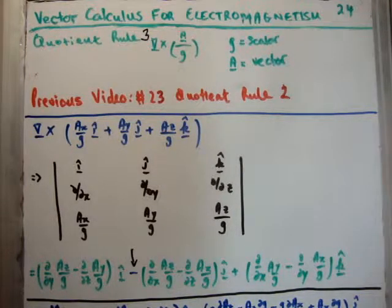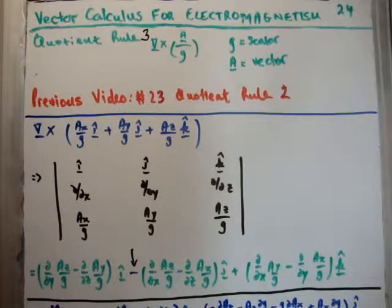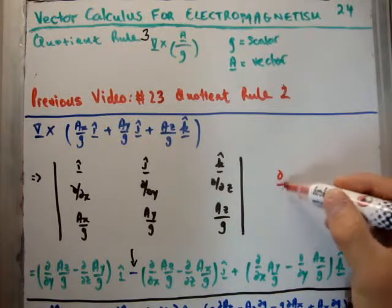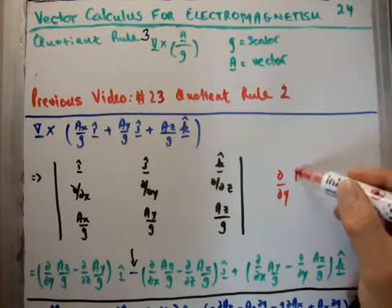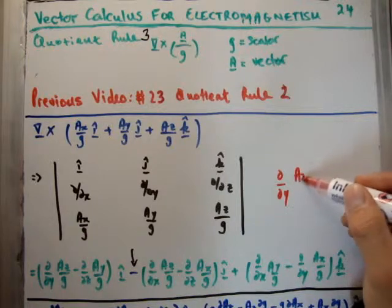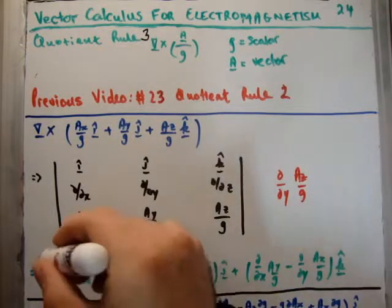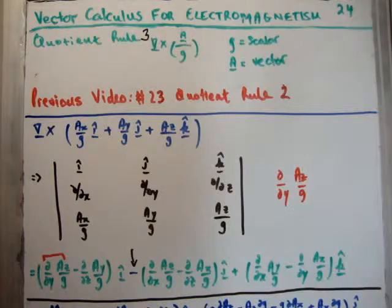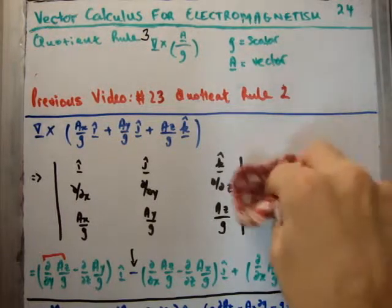Now, the question is this. How do we possibly simplify it? Well, what we need to notice for a start is that we're dealing with quotients. Because we have, for example, del del y of A sub Z over G. And that's this term here. So, we need to apply our normal quotient rules in order to simplify this expression.